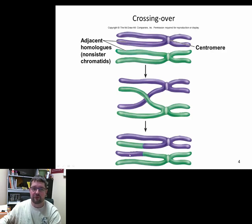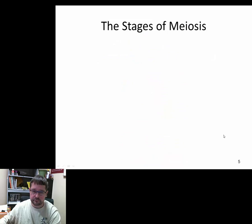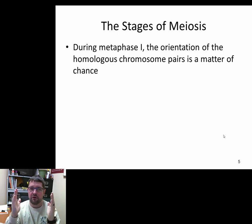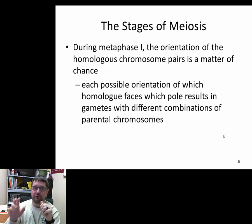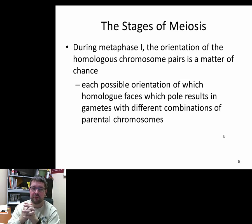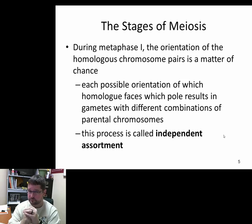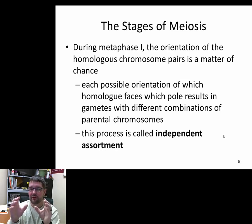The unpredictability of crossing over allows for even more genetic diversity. After crossing over occurs, one of the sister chromatids of each homologous pair will be a hybrid. In metaphase one, similar to metaphase in mitosis, the homologues line up on the metaphase plate as pairs, and their orientation is completely random, resulting in many different combinations — that's independent assortment.